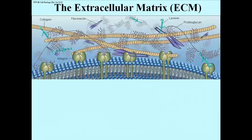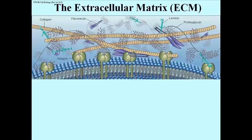The extracellular matrix, or ECM. Several components are illustrated here, so I'll just name them: collagen, which is something you may have heard of; fibronectin; proteoglycan; laminin. And the molecules that are actually in the phospholipid bilayer at the bottom of this picture are receptors called integrin. You can see the integrin binding to collagen, integrin binding to a molecule of fibronectin smack in the middle of this picture, and off to the far right, a molecule of laminin binding to integrin.